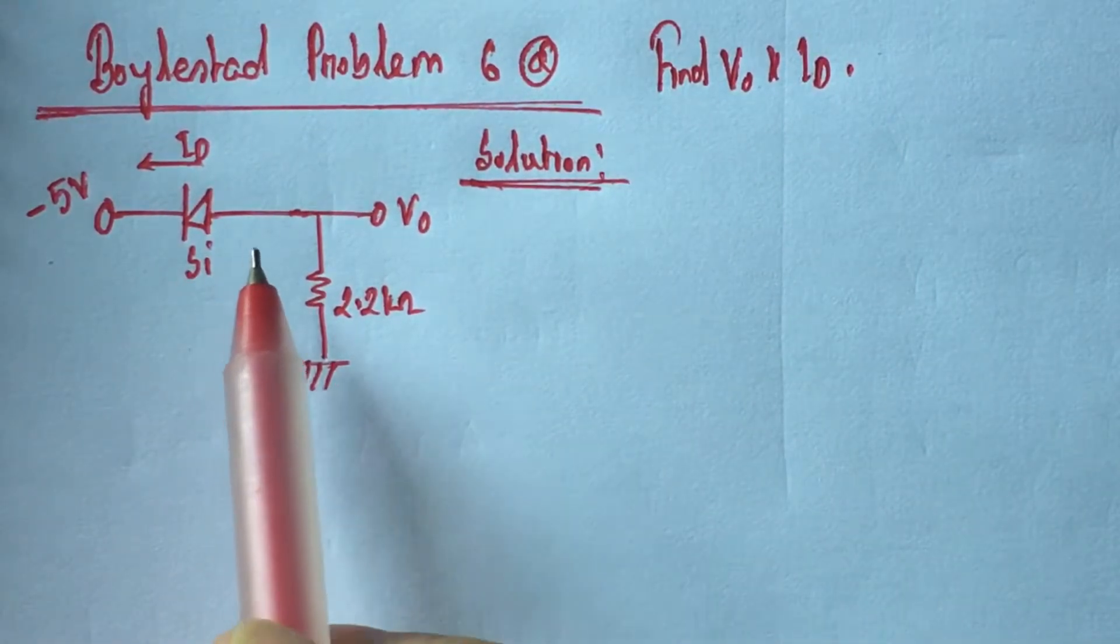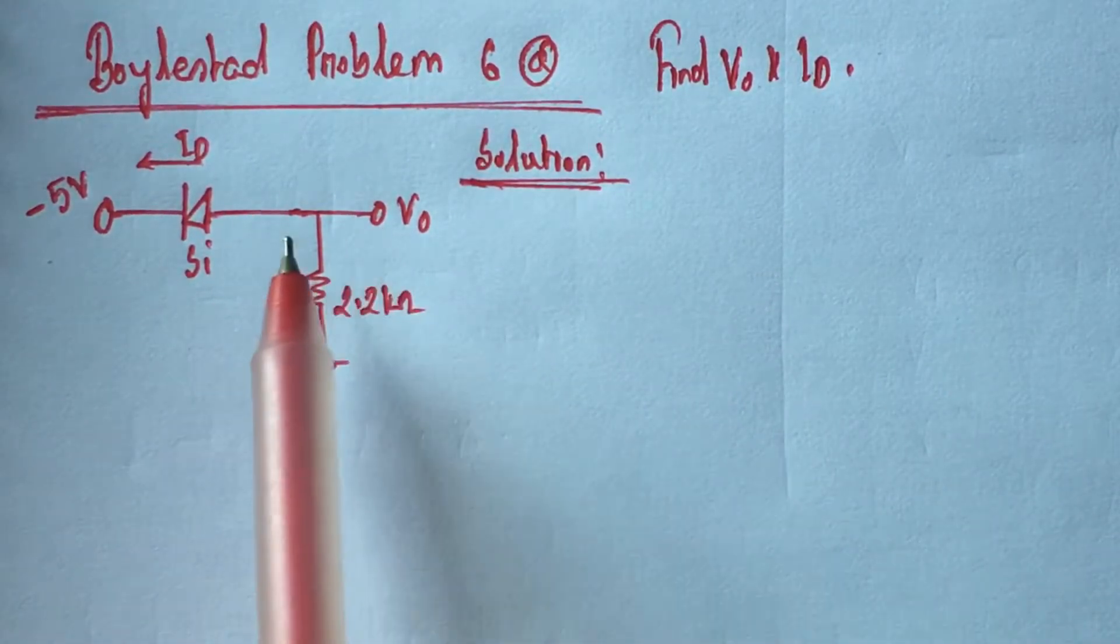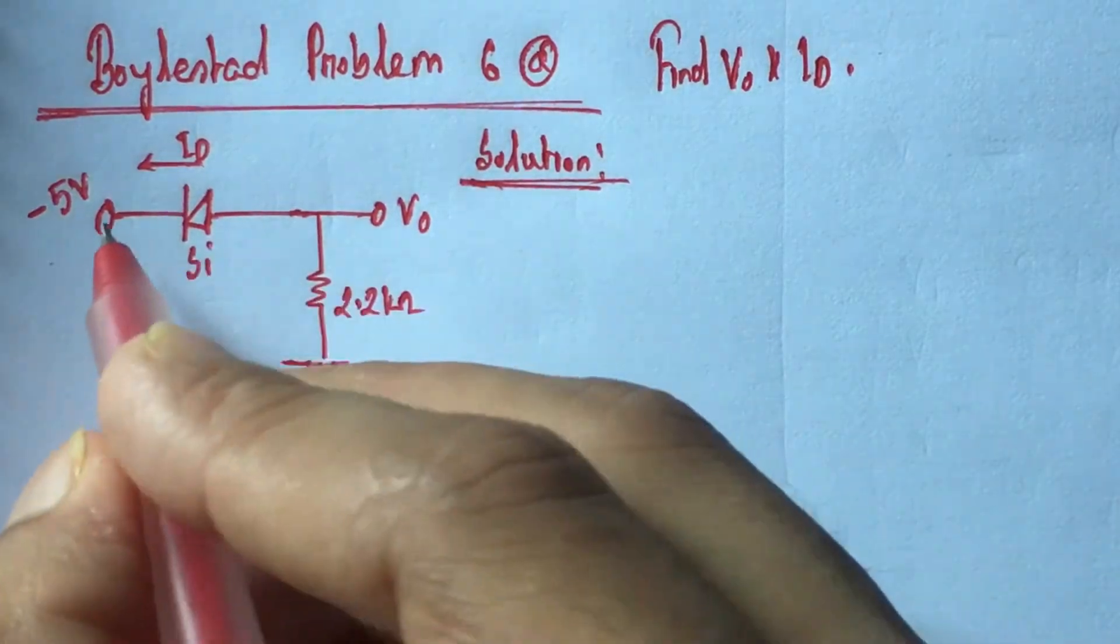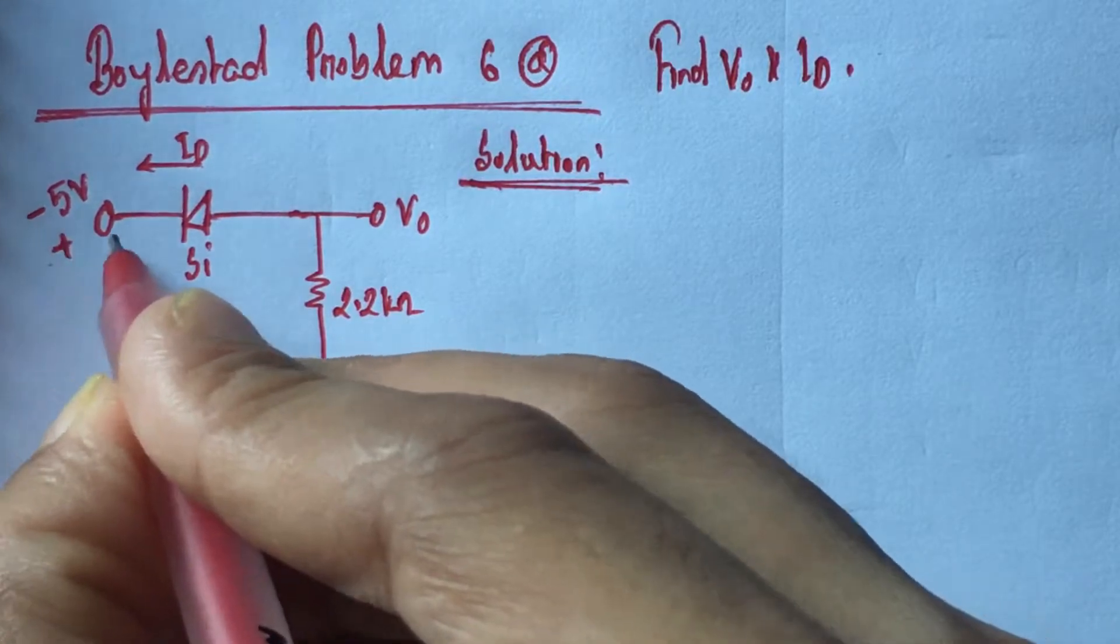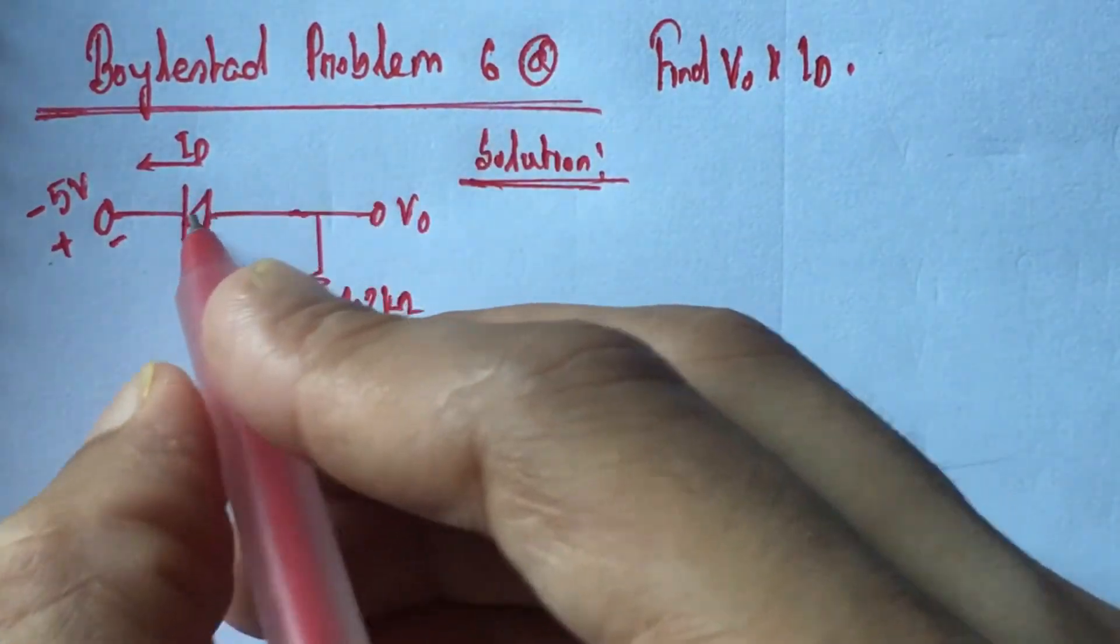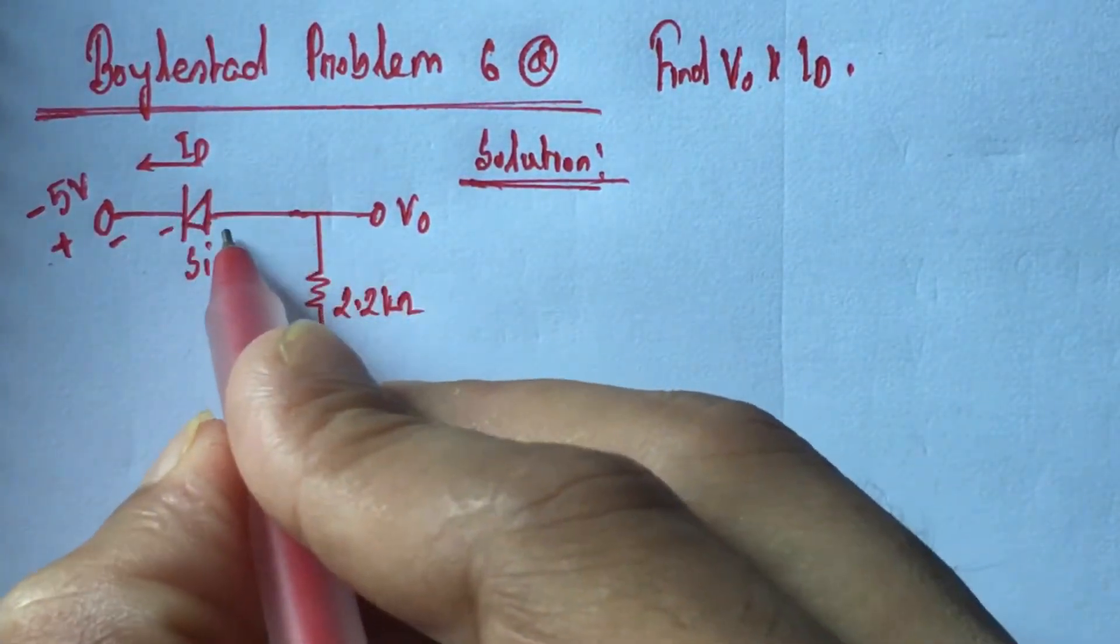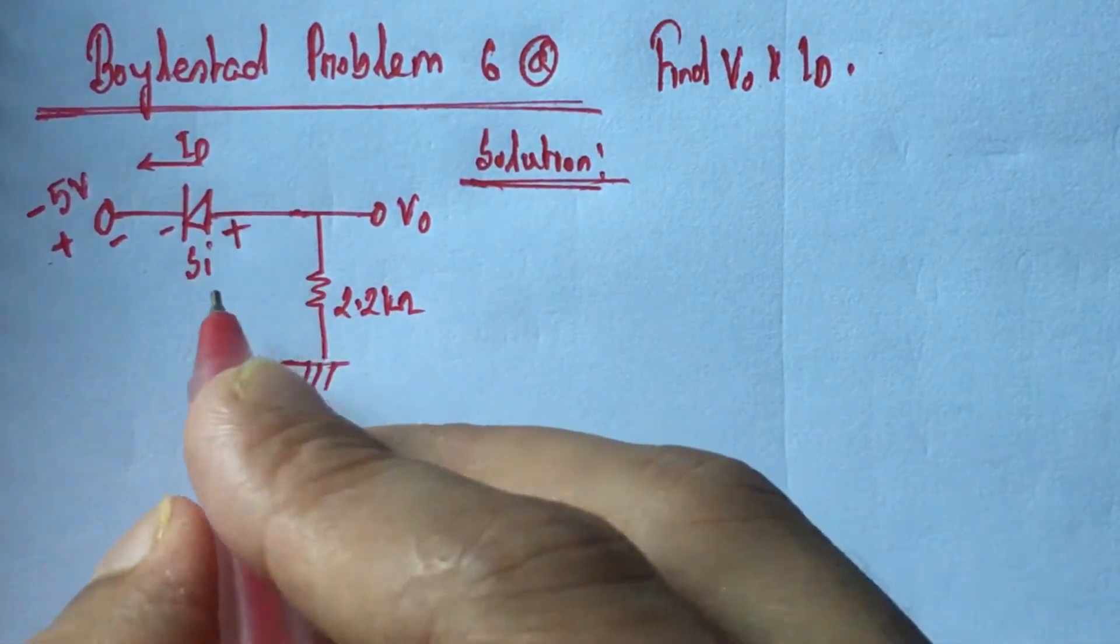This is a diode related problem. So at first we have to identify the state of the diode. We see that the polarity of the biasing voltage is positive here and negative there, and the polarity of the diode is negative here and positive there.